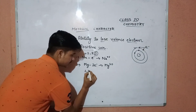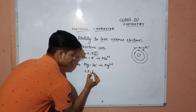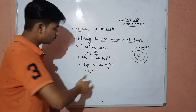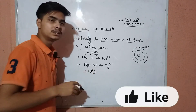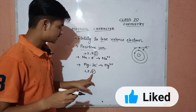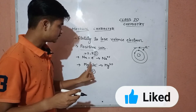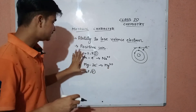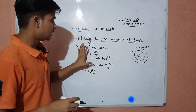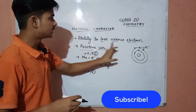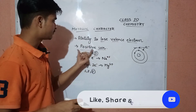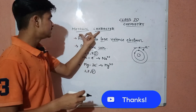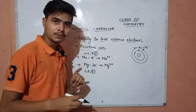Similarly, magnesium — the electronic configuration of magnesium is 2, 8, 2. It can lose two electrons because these are the two electrons in its last shell. After losing two electrons it becomes Mg²⁺. So these elements which have the capability to lose their valence electrons and form a positive ion are called metals, and they have this metallic character.